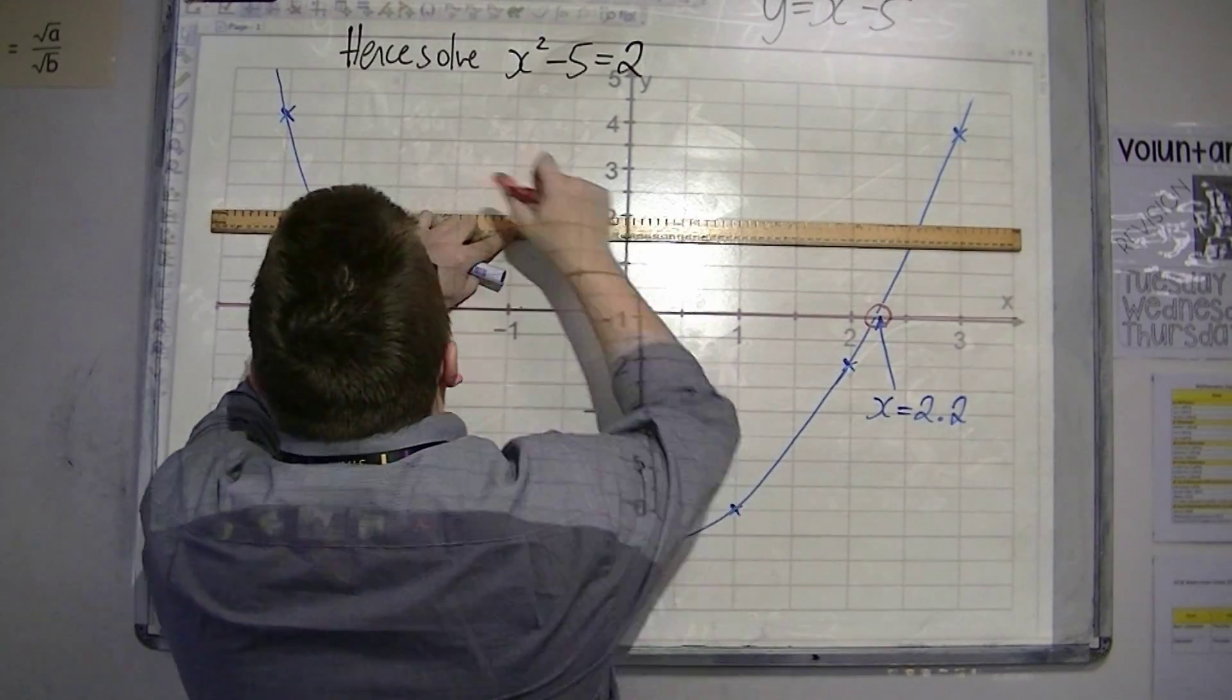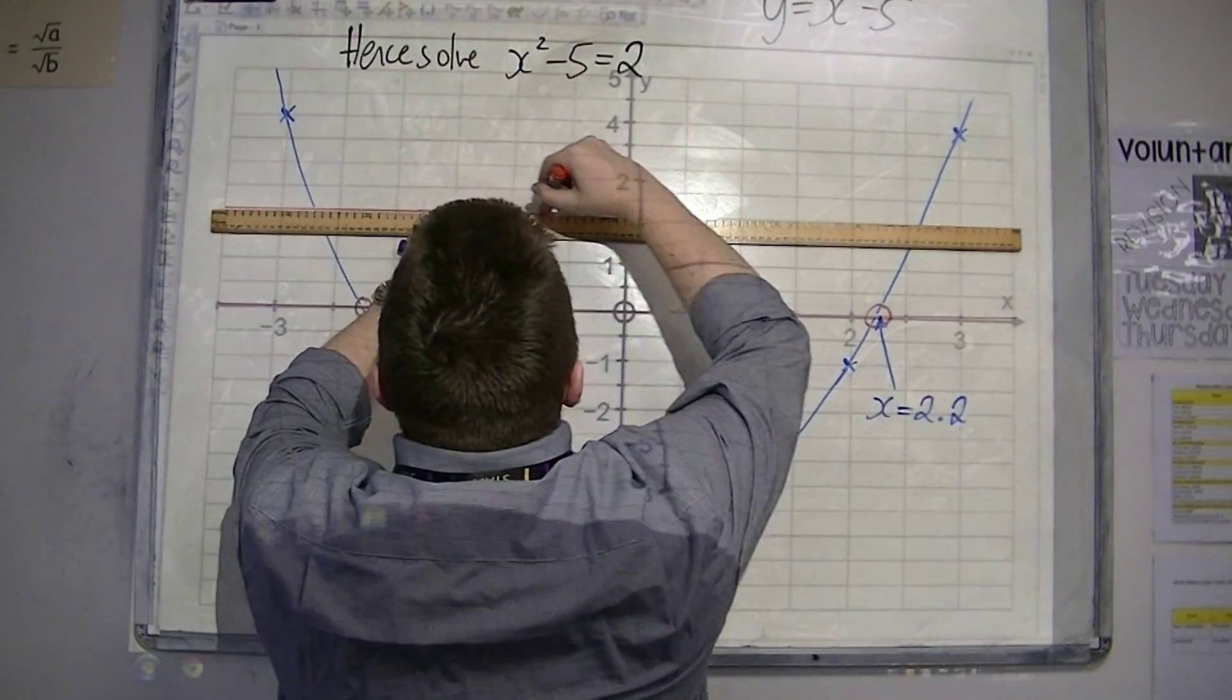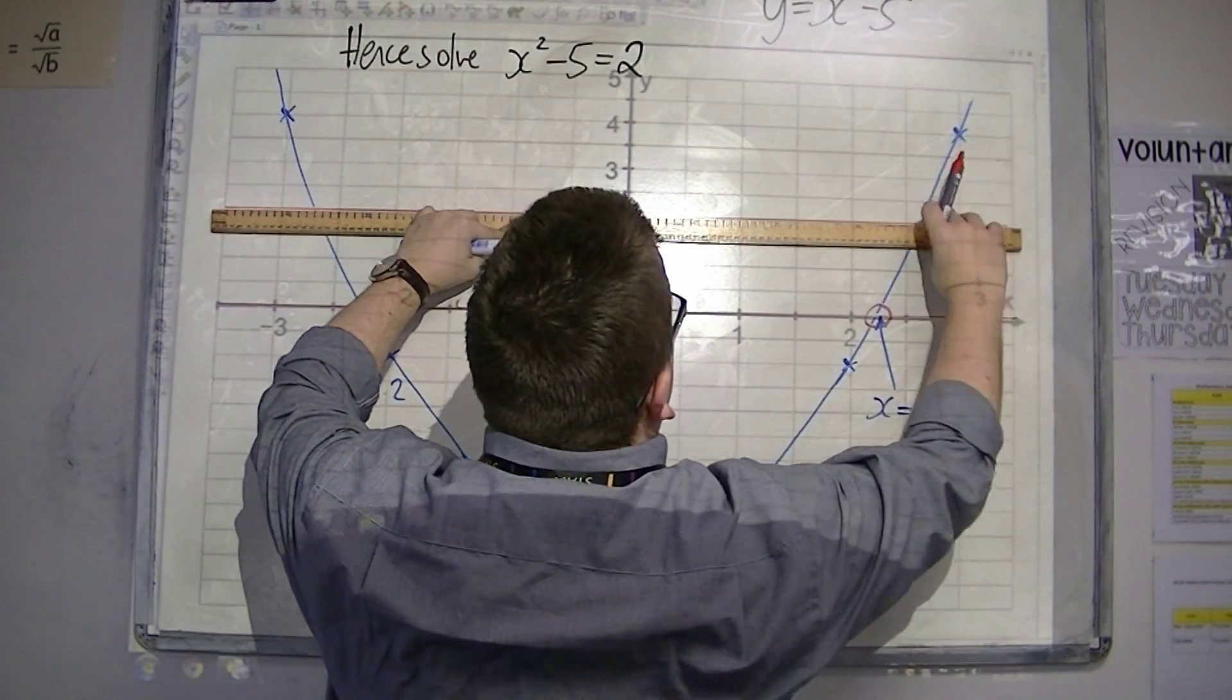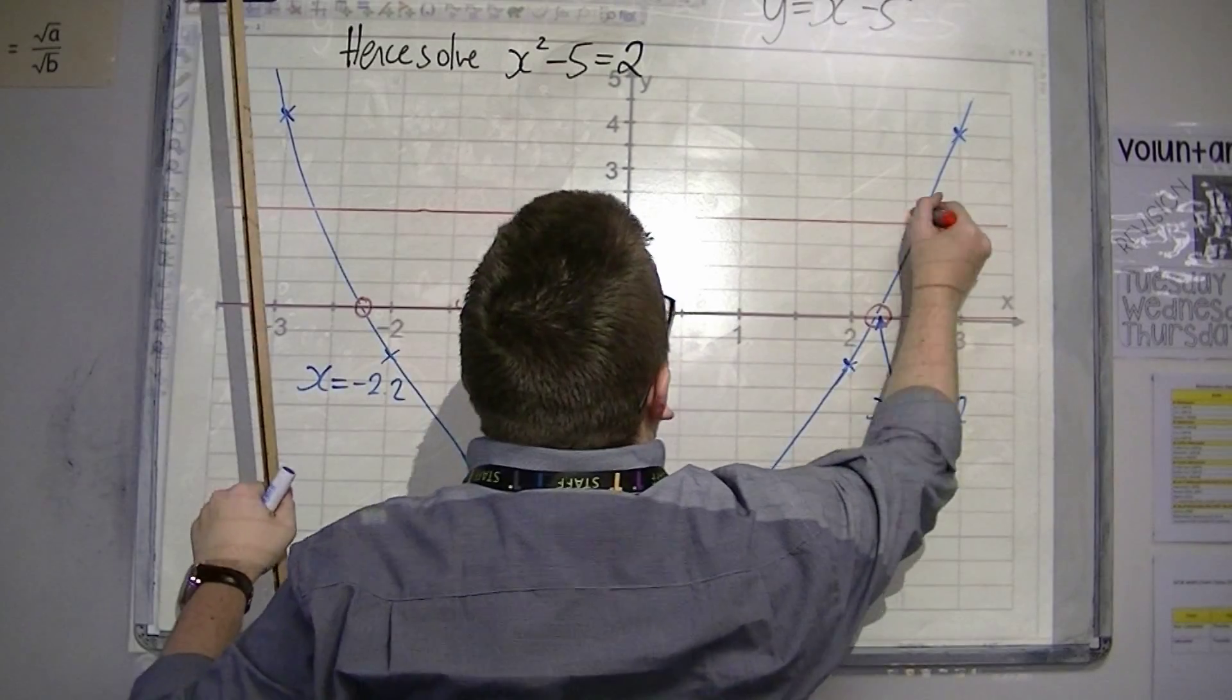So, I now look at where it crosses y equals 2, looking at these two points.